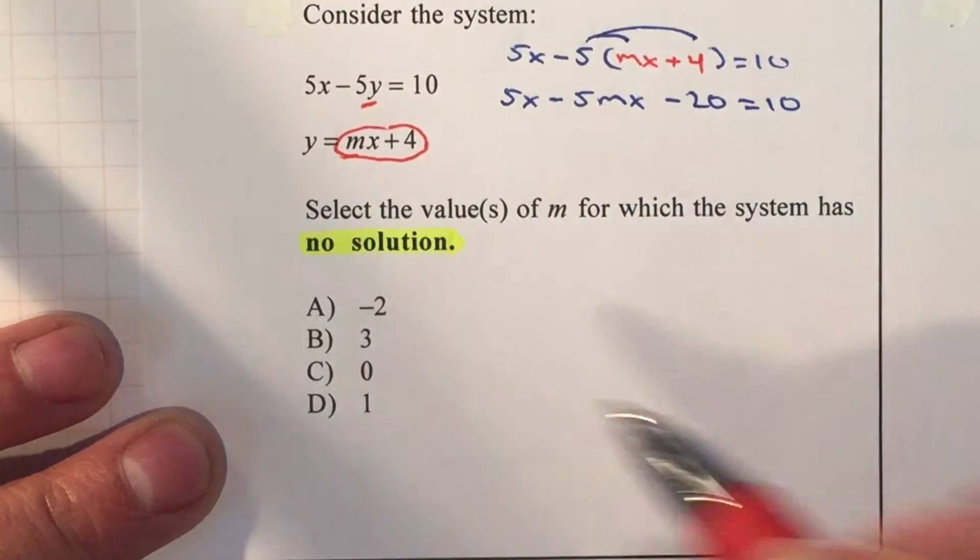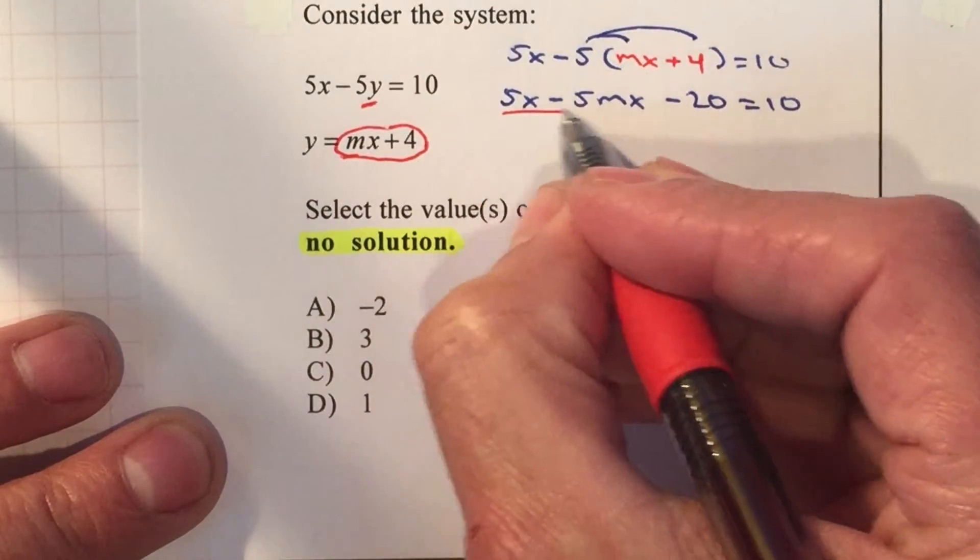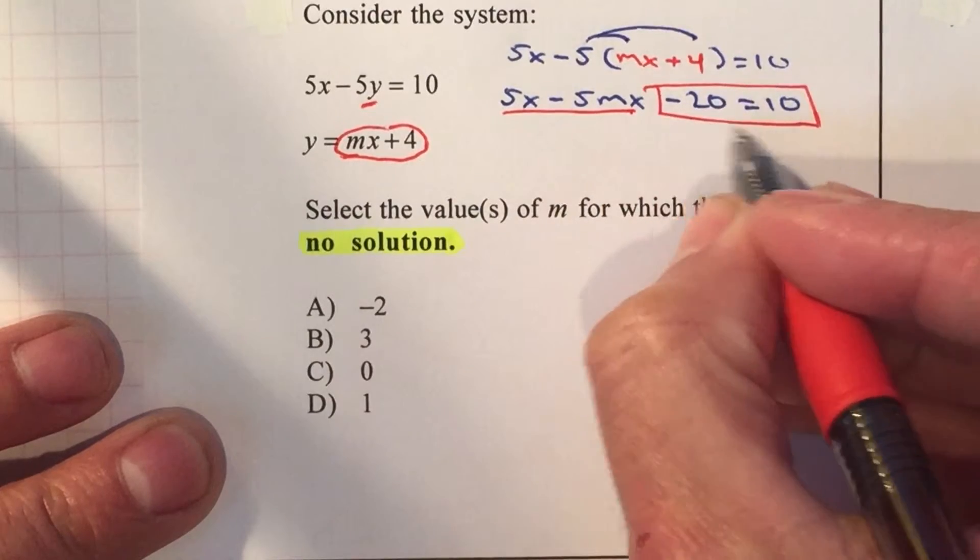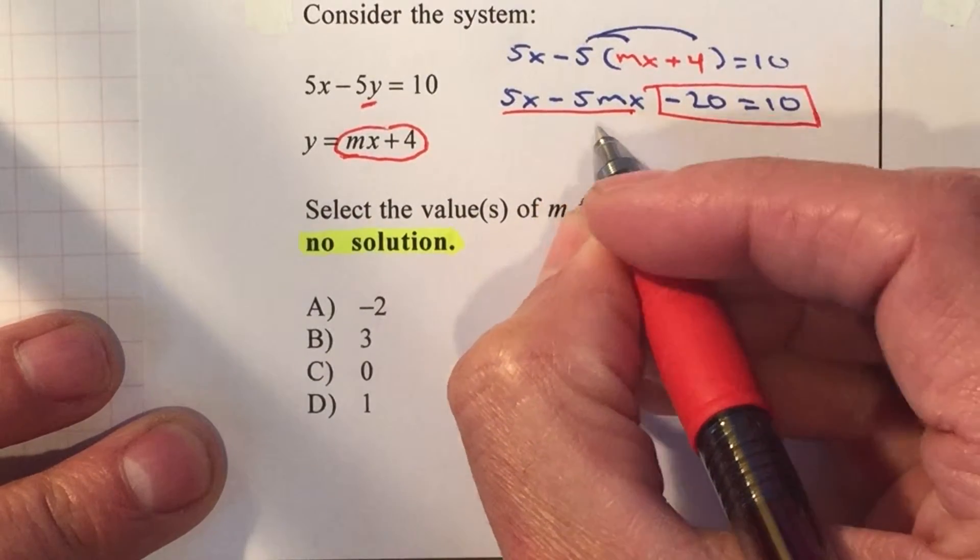Now remember that because we want it to be no solution, we want your x's to cancel, and this should be a false statement. It will be a false statement, but we do need the x's to cancel.